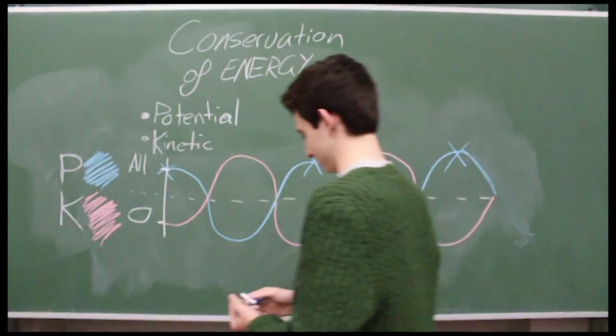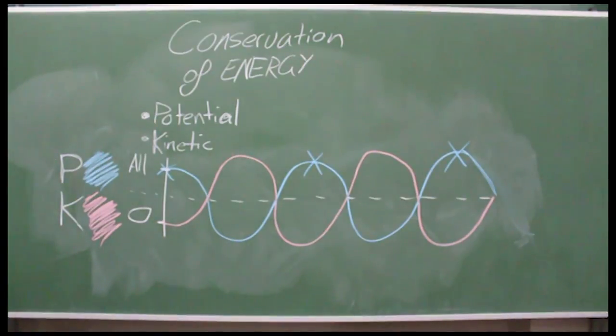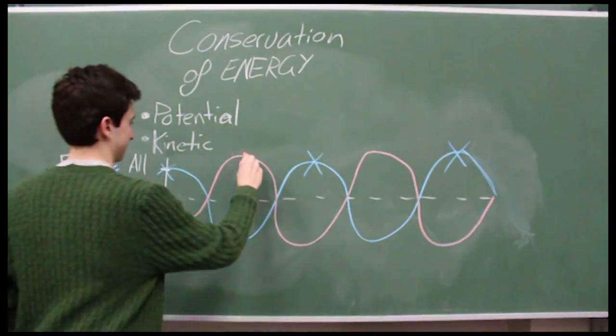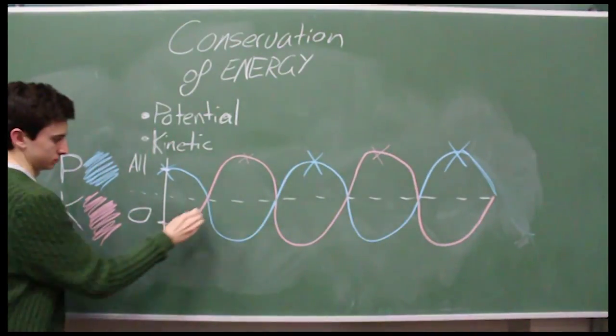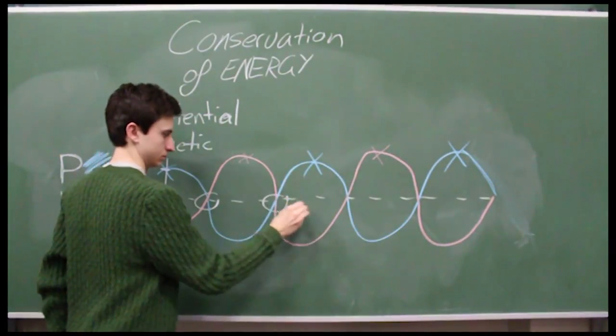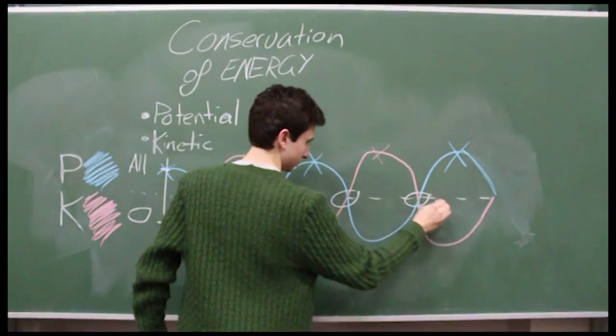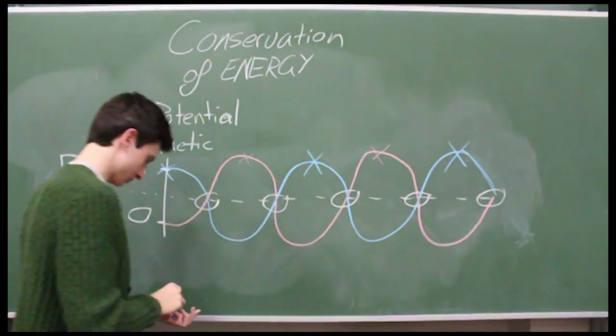Here, the blue crosses indicate when the weight reaches its highest point, and the pink crosses represent when the weight is directly in the centre. Where I have circled indicates when the pendulum was halfway between its highest point and the centre.